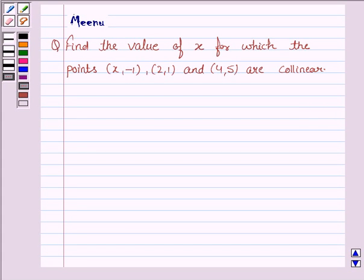Hello friends, let's discuss the following question. It says, find the value of x for which the points (x-1, -1), (2,1) and (4,5) are collinear.